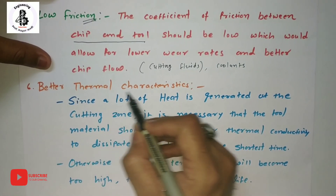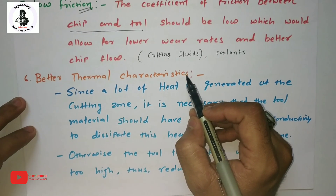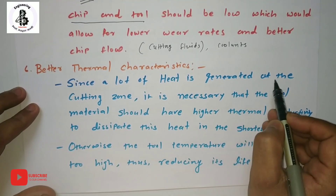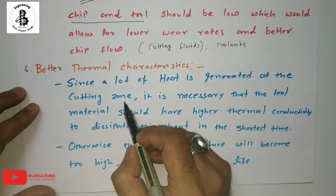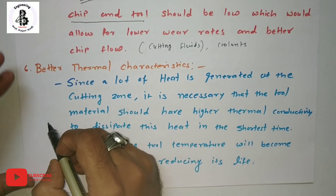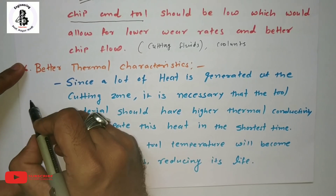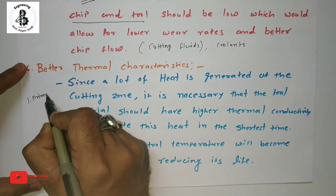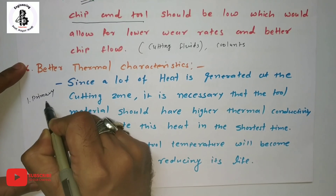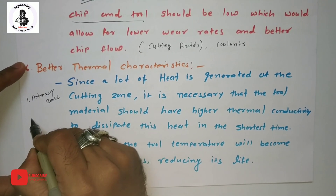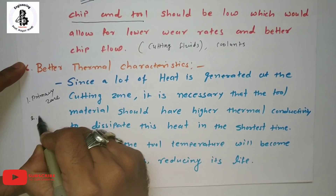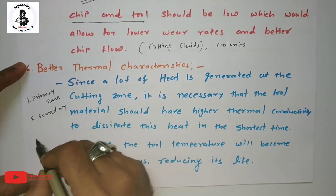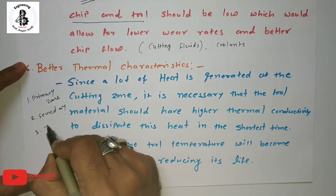The sixth characteristic is good thermal properties. A lot of heat is generated at the cutting zone. There are basically three zones: the primary zone, the secondary zone, and the chip-tool interface.